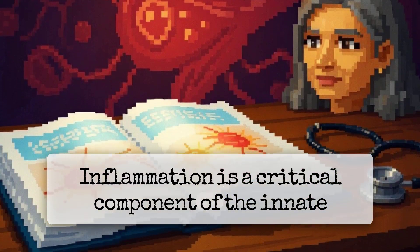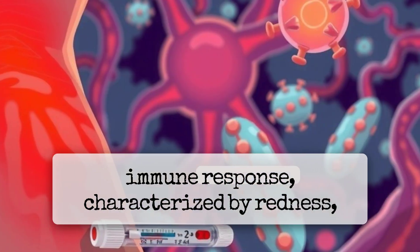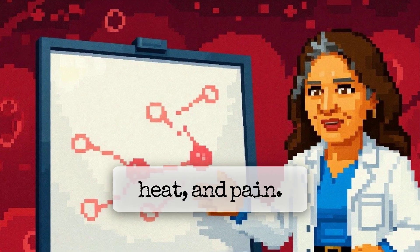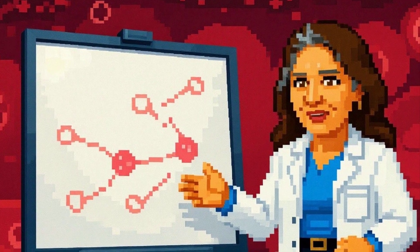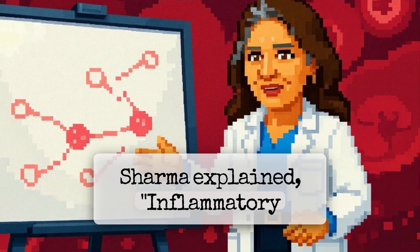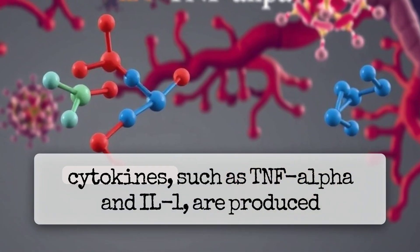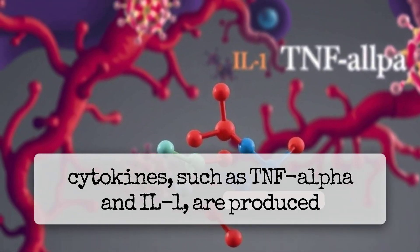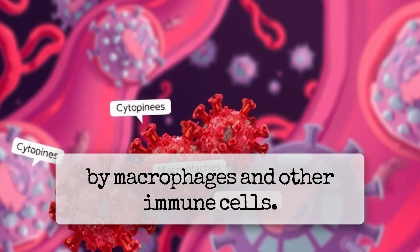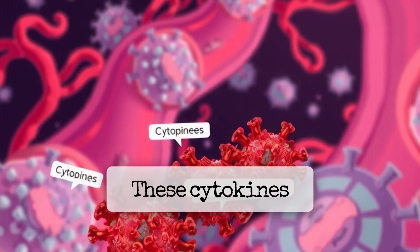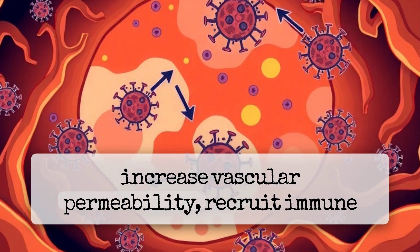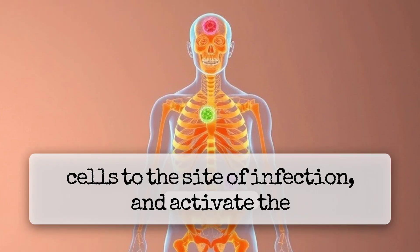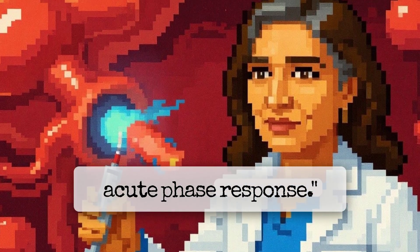Inflammation is a critical component of the innate immune response, characterized by redness, swelling, heat, and pain. Inflammatory cytokines, such as TNF-alpha and IL-1, are produced by macrophages and other immune cells. These cytokines increase vascular permeability, recruit immune cells to the site of infection, and activate the acute phase response.